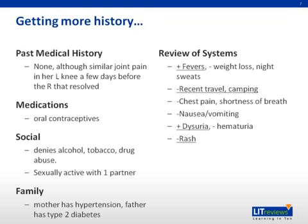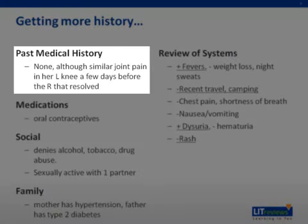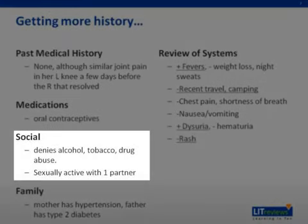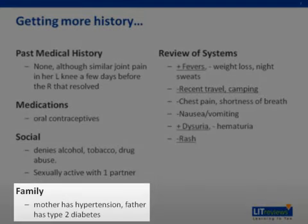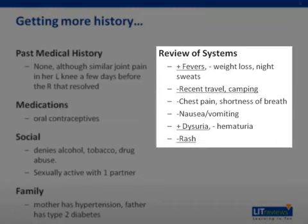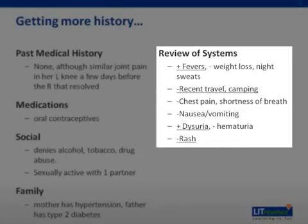Let's get some more history. The patient has no past medical history, although she did endure similar joint pain in her left knee prior to the current presentation that has since resolved. She only takes oral contraceptive medications and denies alcohol, tobacco, or illicit drug use. She is sexually active with one partner. Her family history includes a mother with hypertension and a father with type 2 diabetes. In her review of systems, she endorses recent fevers without weight loss or night sweats. She has not recently been traveling or camping. She denies chest pain, shortness of breath, nausea, or vomiting. She has had some dysuria or burning while she urinates recently, but no hematuria, and she has not noticed any skin rash.